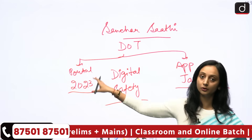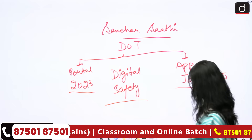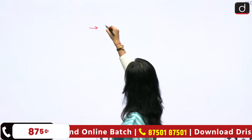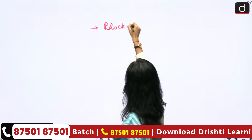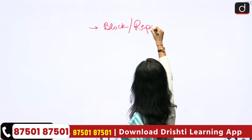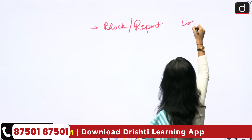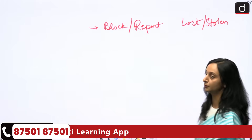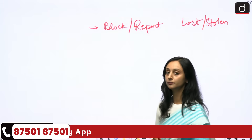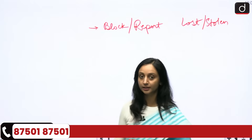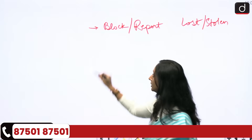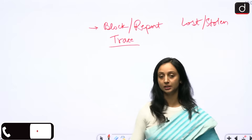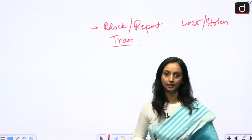How? By making use of the Sanchar Saathi portal or the Sanchar Saathi mobile application, you can actually block or report your lost or stolen mobile phones. If you lose your mobile phone or if it is stolen, you can trace it, report it, block it — all these things can be done through the Sanchar Saathi portal or application.